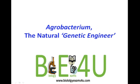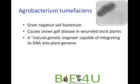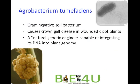In this video we are going to discuss about the topic: Agrobacterium, the Natural Genetic Engineer. Agrobacterium tumefaciens is a gram-negative soil bacterium that causes crown gall disease in dicot plants. Agrobacterium has the innate natural genetic engineering capability of integrating its DNA into the plant genome, ultimately resulting in crown gall disease.